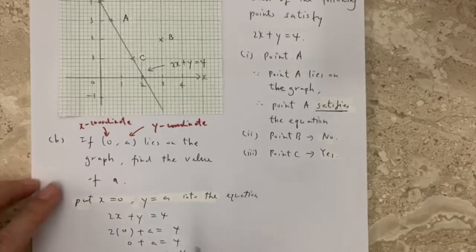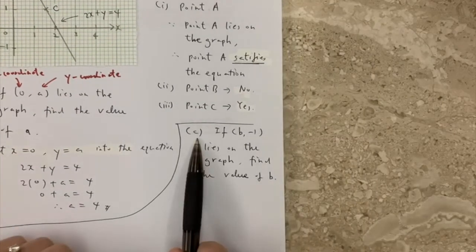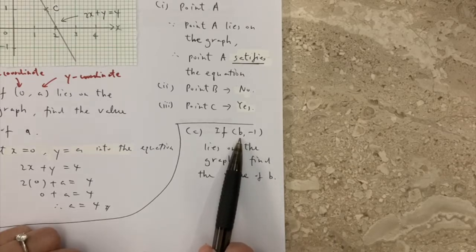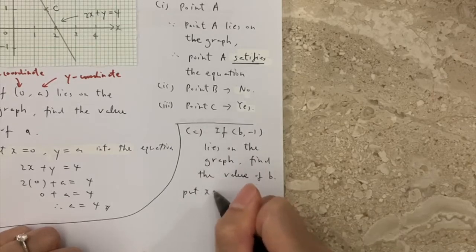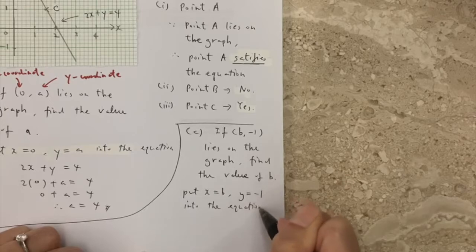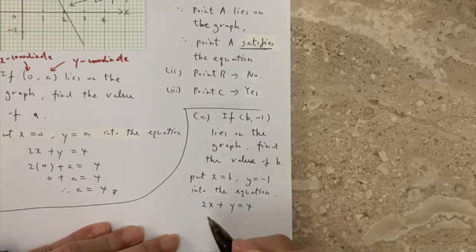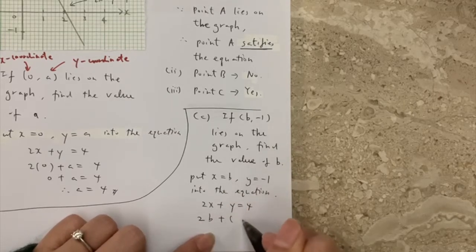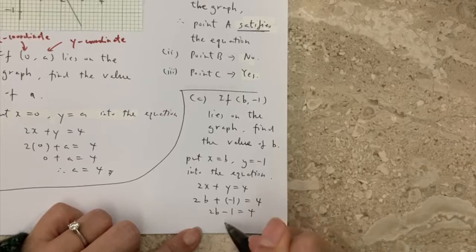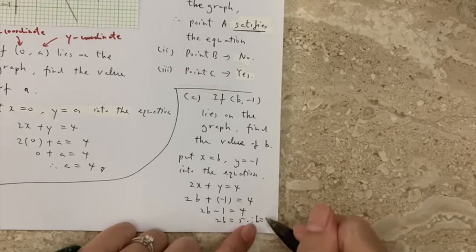For point C, if the point (b, minus 1) lies on the graph, b is the x-coordinate and minus 1 is the y-coordinate. We put x equals b and y equals minus 1 into the equation 2x plus y equals 4. Using brackets for substitution: 2b plus bracket minus 1 bracket equals 4, so 2b minus 1 equals 4, then 2b equals 5, therefore b equals 5 divided by 2, which is 2.5.